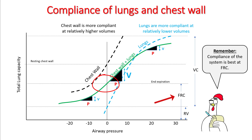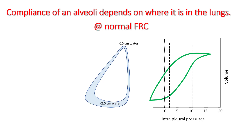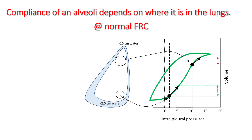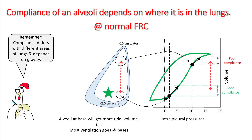At FRC, the compliance of the system is best. Compliance of an alveolus also depends on its position in the lungs. Since negative pressure differs at the apex and base, alveoli sit at different positions on the pressure-volume loop. Alveoli at the bottom are in a more compliant area compared to apical alveoli, which are already over-stretched, so the same pressure delivers more volume to basal alveoli than to apical alveoli.